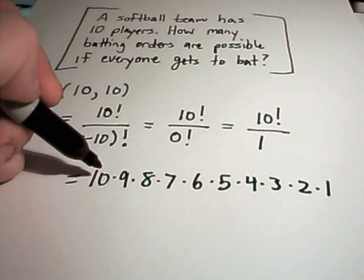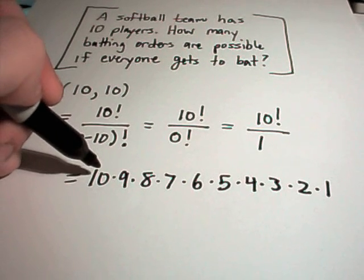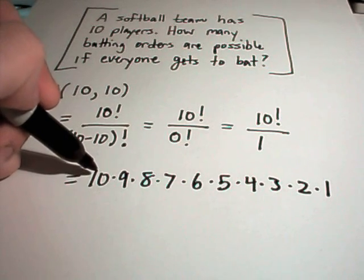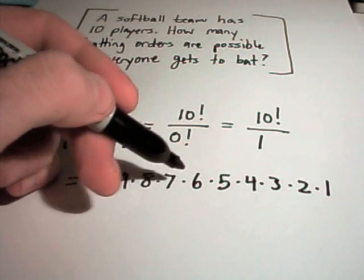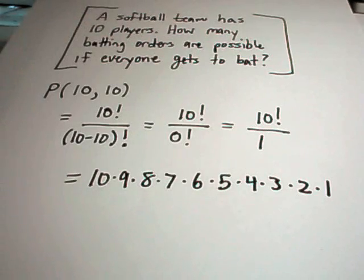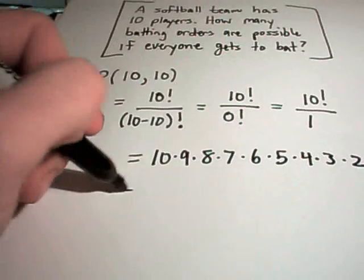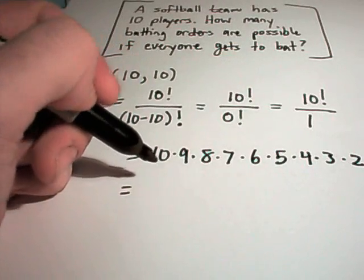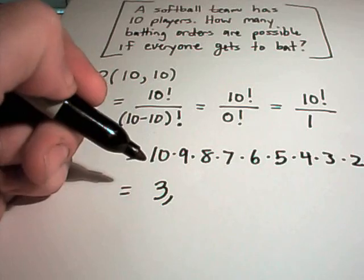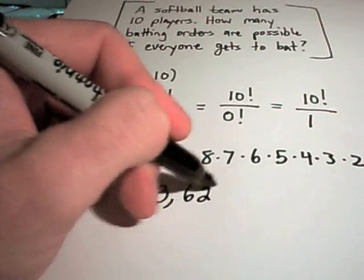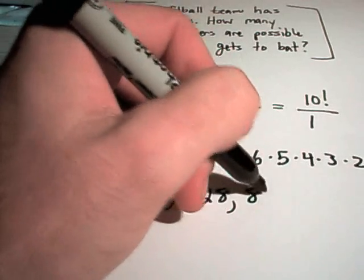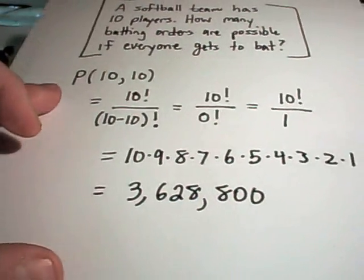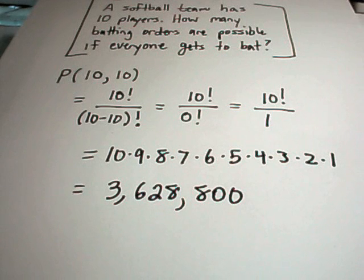The first choice, you would have 10 people to pick from, then you would be followed with only 9 remaining, and then 8 remaining, 7 remaining, 6 remaining, etc. down the line. So we are just using the multiplication principle here. And check my arithmetic here. It looks like this turns out to be 3,628,800 ways that you could have your different batting orders with just 10 different people.